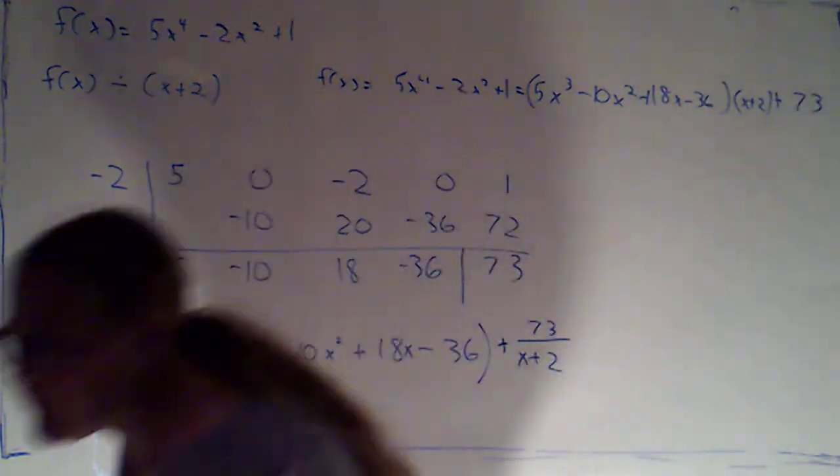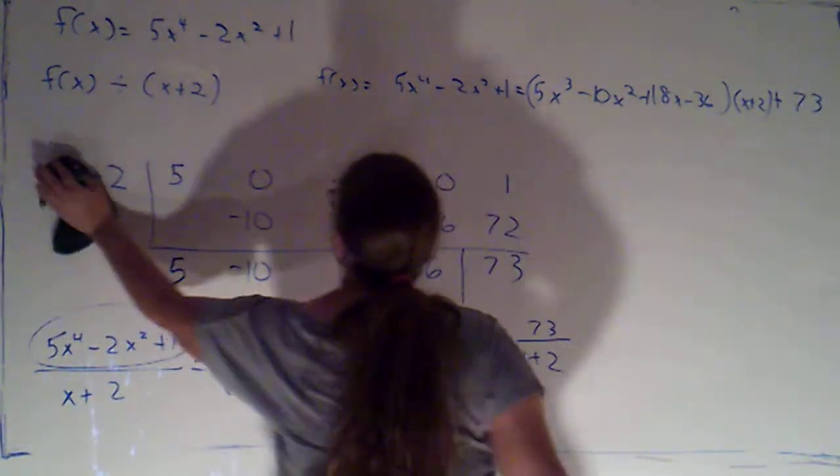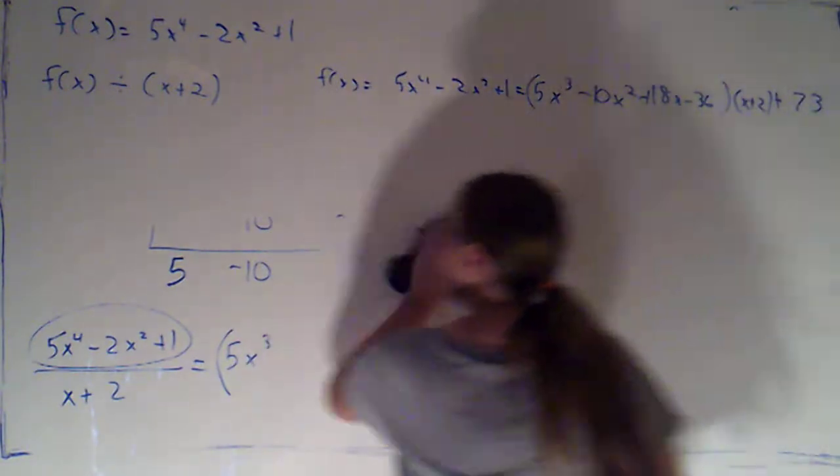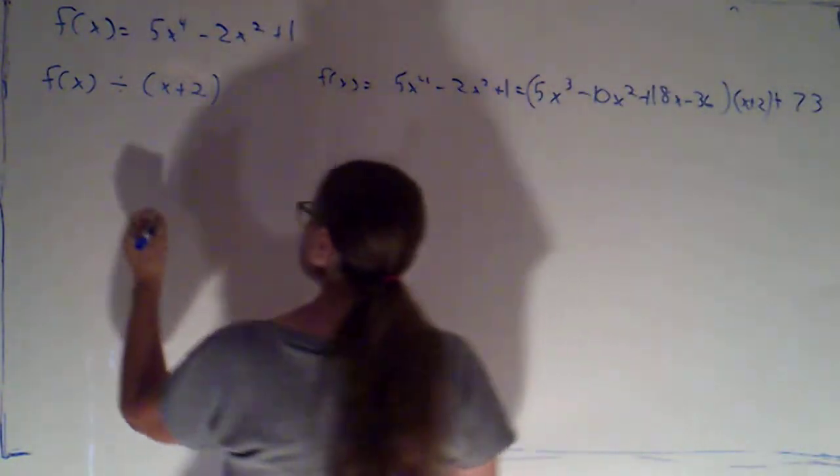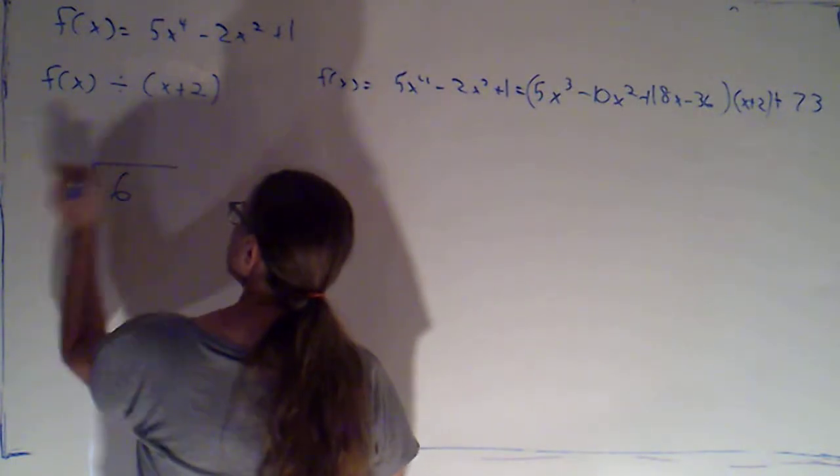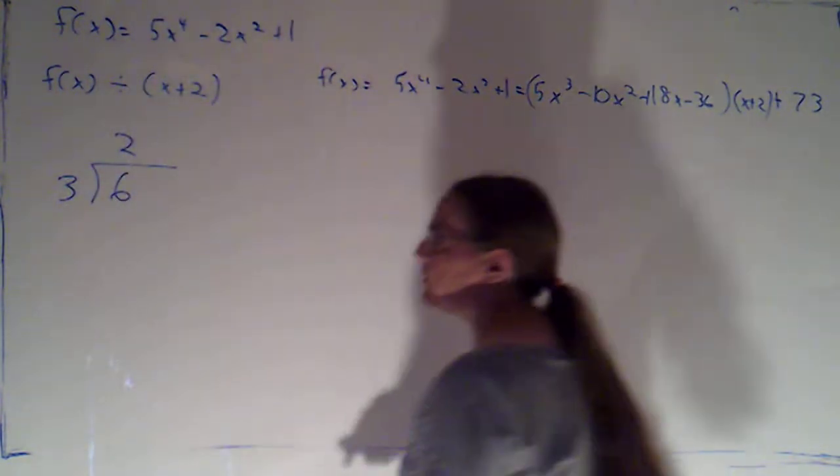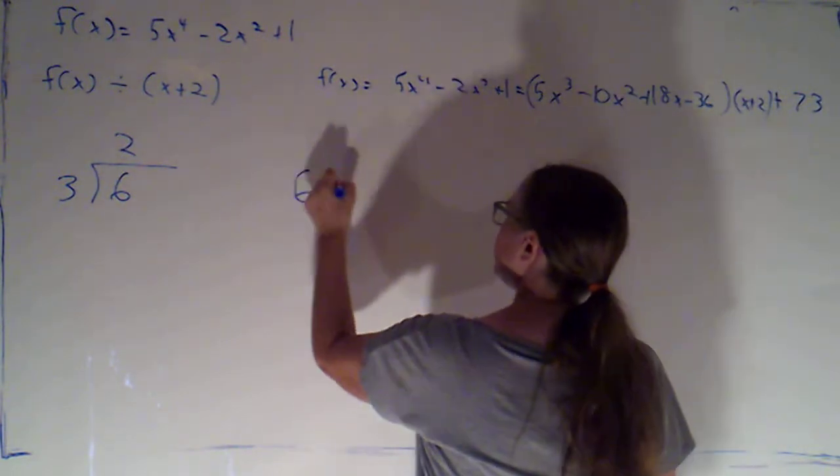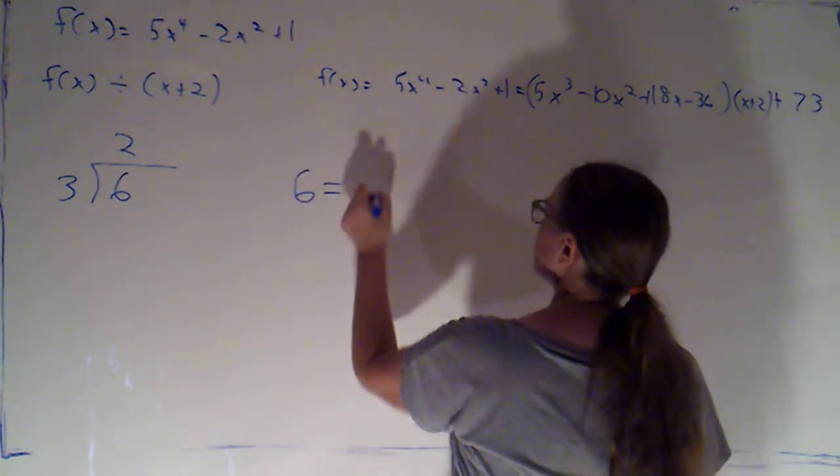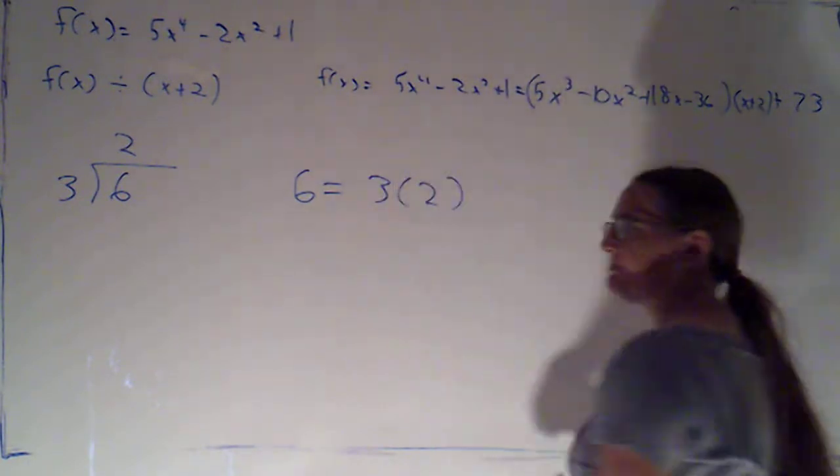Now this sort of goes with the fact that any time I have a division problem, there's a corresponding multiplication problem. So for example, if I do 6 divided by 3, that's going to equal 2. That's a lovely division problem. Well, the corresponding multiplication problem is that 6 is equal to 3 times 2.